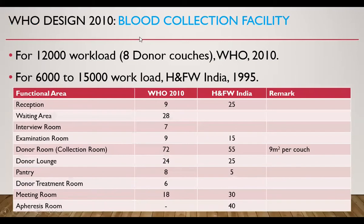The functional areas of Blood Collection Facility — these requirements are for a workload of 12,000 units per year requiring 8 donor couches (WHO 2010), and for a workload of 6,000 to 15,000 donations per year (Health and Family Welfare India 1995). The Blood Collection Facility includes a reception area, waiting area, interview room, examination room, donor room (actual collection room), donor lounge, pantry, donor treatment room (in case of any adverse reaction), and meeting room. These figures are in square meters and represent area requirements from both guidelines.